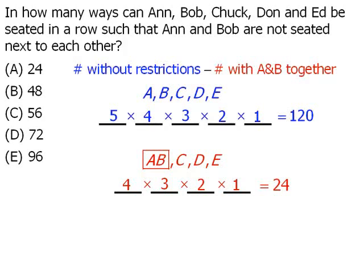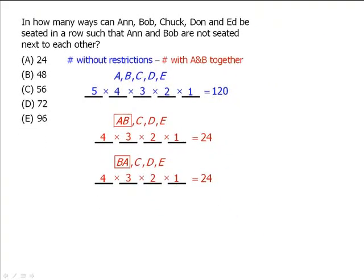Now at this point it seems like we're done. However, we've only considered the possibility that Ann is seated to the left of Bob. What about the possibility that Bob is seated to the left of Ann? So we must also consider this arrangement. Once again, we'll take these four entities and seat them in four chairs. Using the same calculations we did earlier, the total number of ways to arrange these four entities will be 24 as well. So now we're done.